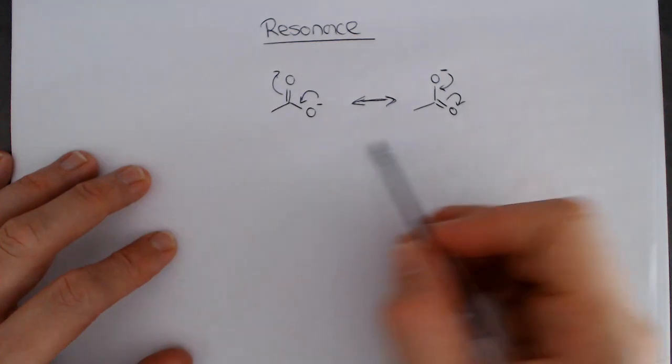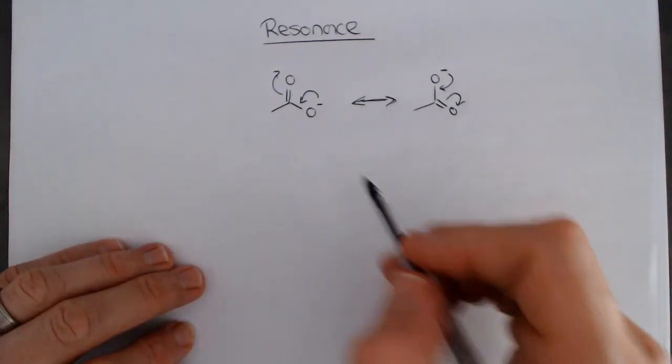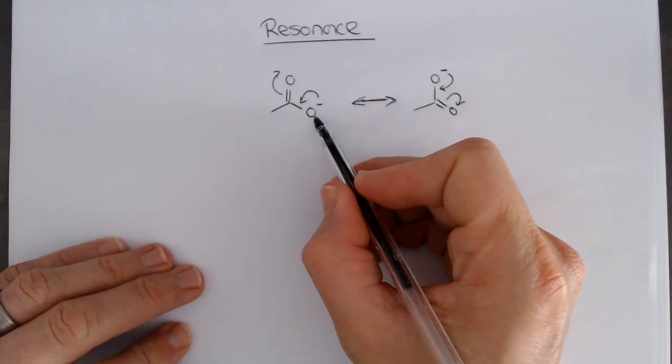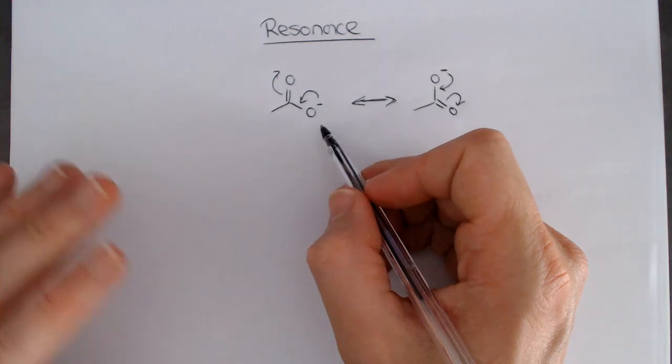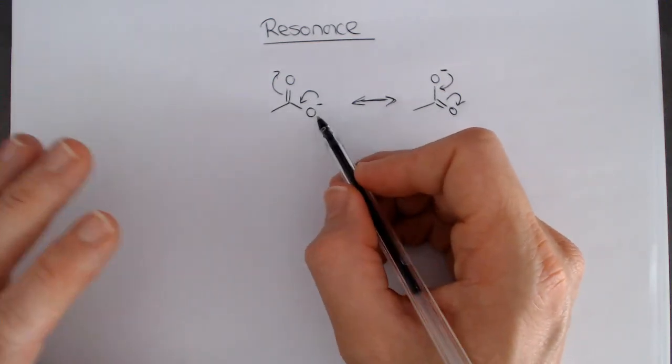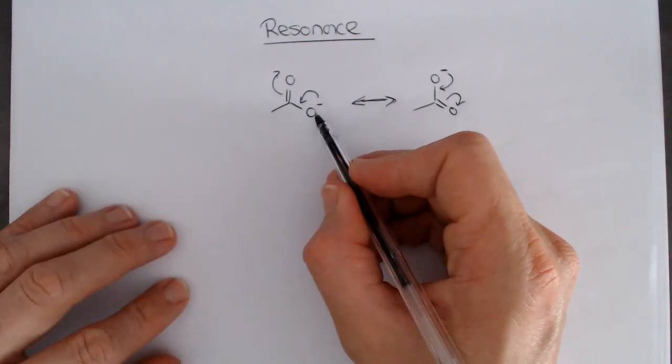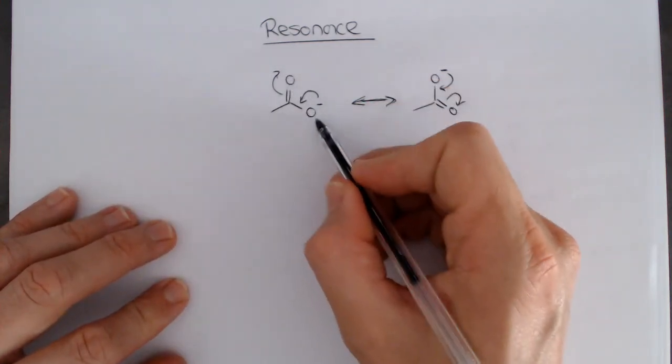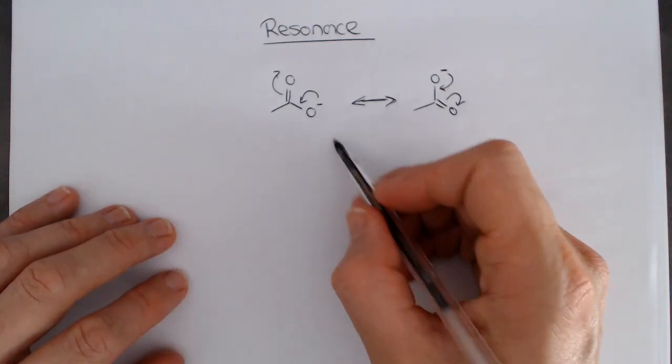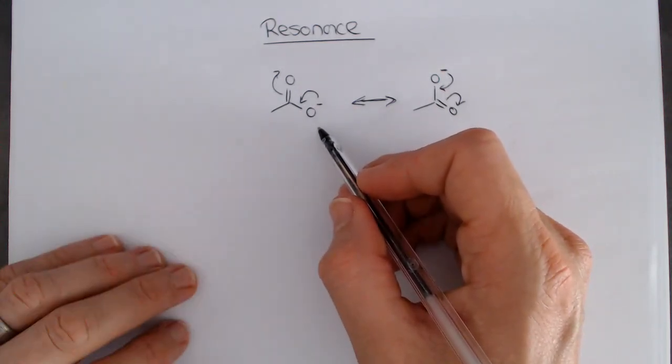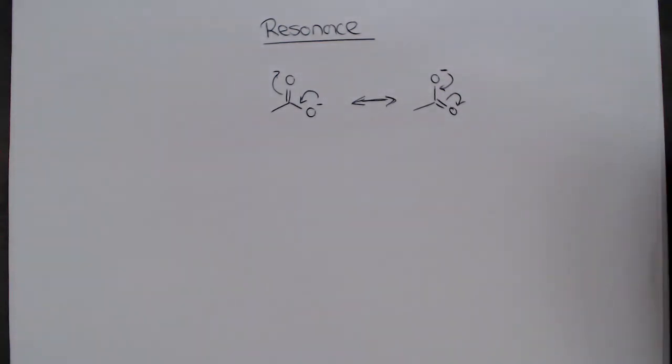The important thing here is that this is showing us a picture that the negative charge is not localized on either one of those oxygens, but spends half its time, or that's even a bad description because it's not just a pure negative charge, but rather that it's spread over those two oxygen atoms. So neither one of them has got a full negative on them, but is effectively a partial negative, and that's what that picture is showing us.